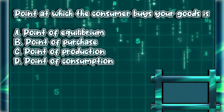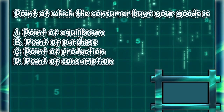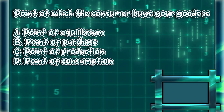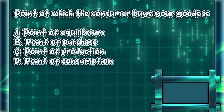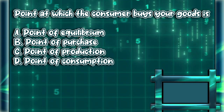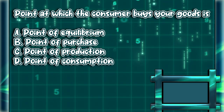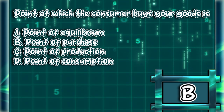Point at which the consumer buys your goods is: A. Point of equilibrium. B. Point of purchase. C. Point of production. D. Point of consumption. The answer is letter B.